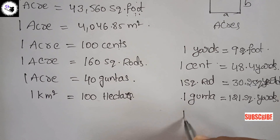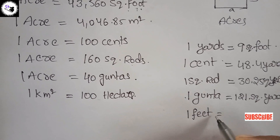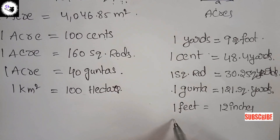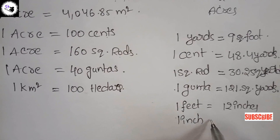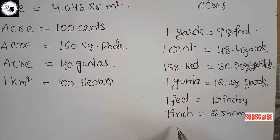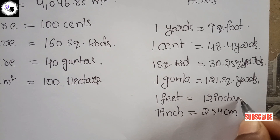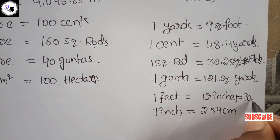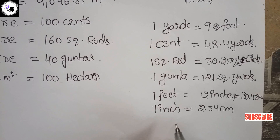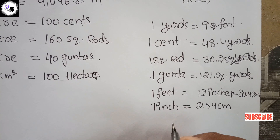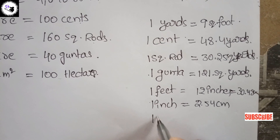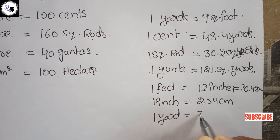Small conversions: one feet is equal to 12 inches, or 30.48 centimeters. One inch is equal to 2.54 centimeters. And one yard is equal to 3 feet.